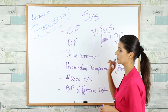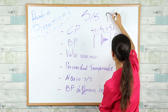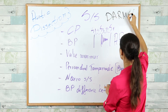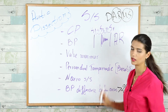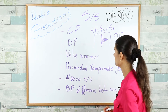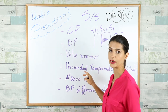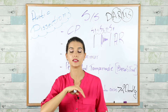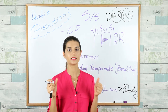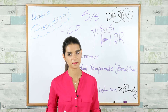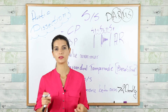A useful mnemonic for remembering diastolic murmurs is DARMS — diastolic murmurs are aortic regurgitation and mitral stenosis. Also, if the most proximal ascending aorta is involved, you can end up with pericardial tamponade — blood spills into the pericardial sac. Beck's triad to remember: hypotension, distant heart sounds, and JVD.